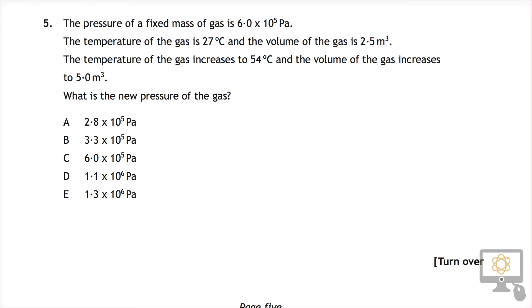Let's look at question 5 from the National 5 2014 Physics paper. It says the pressure of a fixed mass of gas is 6×10⁵ Pascals, the temperature of the gas is 27 degrees Celsius, and the volume is 2.5 cubic meters.